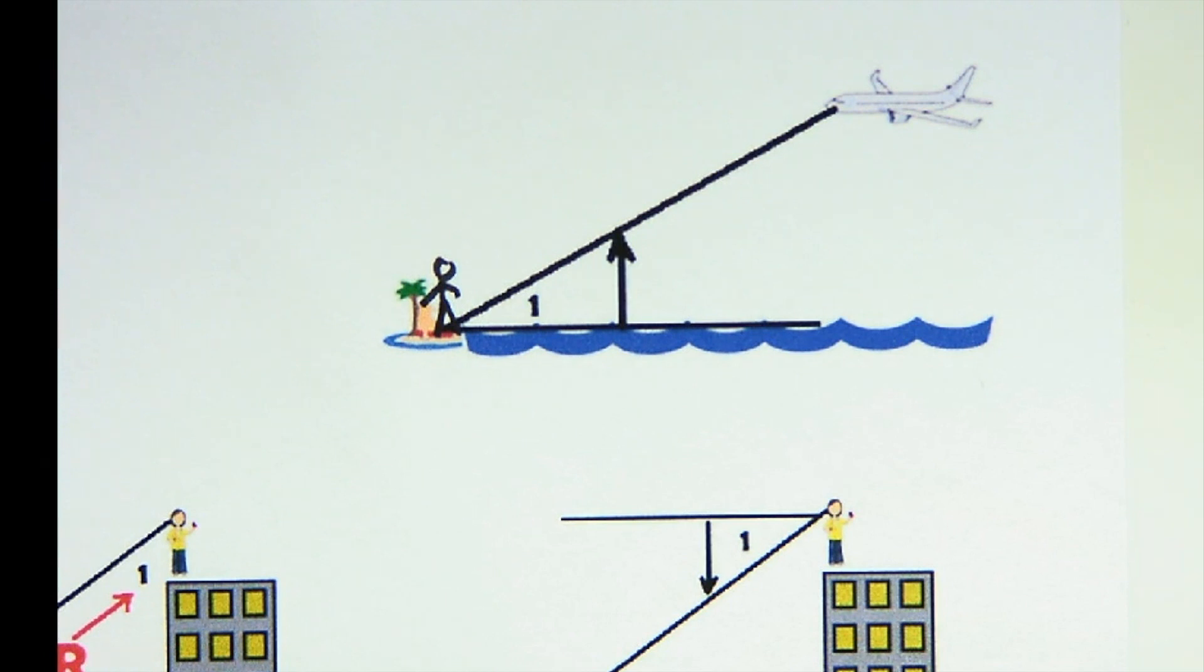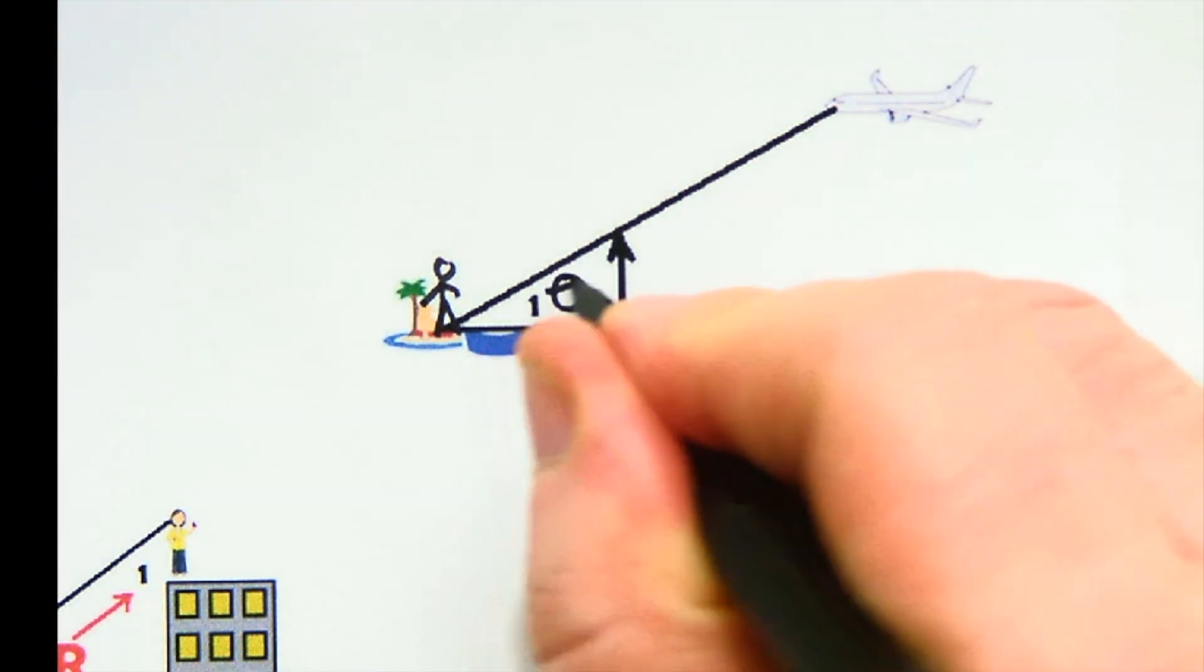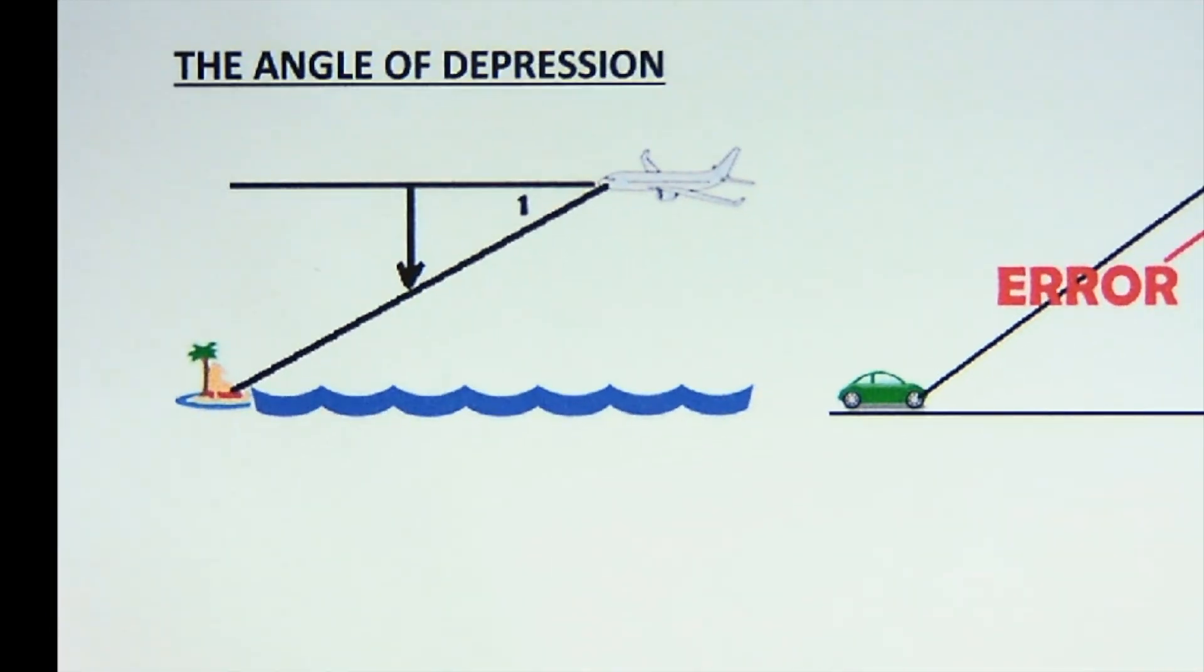Very few students get angle of elevation wrong. It's horizon up. It's right here, this angle. Now most everybody gets angle of depression wrong. And it's just because, you'll see in the next example why this happens.